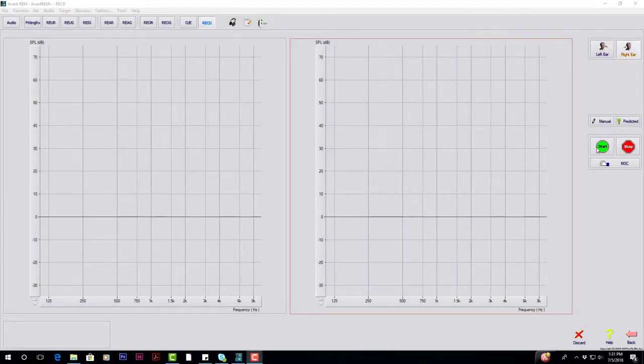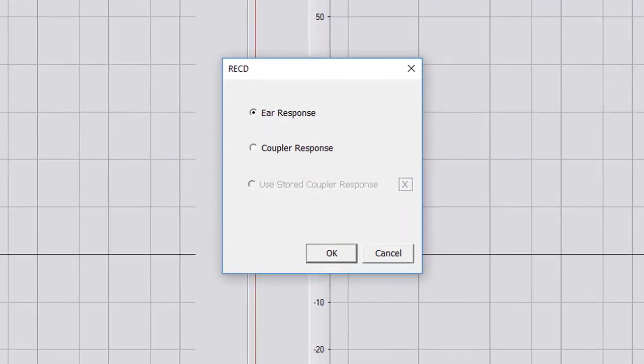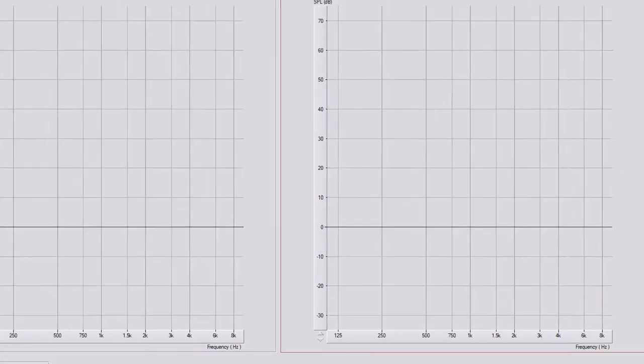Select the green start button to open the measurement type selection screen. Choose ear response and select OK to begin measurement.